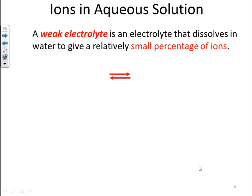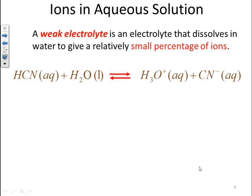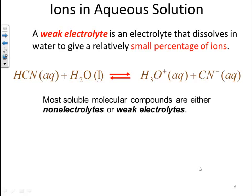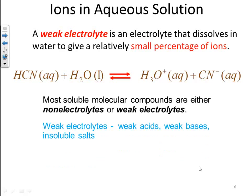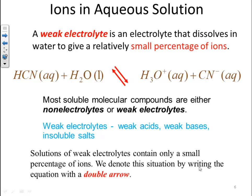A weak electrolyte is one that dissolves in water to give a relatively small percentage of ions. It does dissolve, but there's a small amount of ions formed. Take for instance HCN, which is a weak acid — hydrocyanic acid. It forms hydronium and cyanide ions; however, less than 5% of the ions are formed. The majority of the HCN stays as a bulk substance. Most soluble molecular compounds are either non-electrolytes or very weak electrolytes. Weak electrolytes are typically your weak acids, your weak bases, and your insoluble salts. The solutions of weak electrolytes contain only a small percentage of ions, and we denote this by writing the equation with a double arrow in the middle.